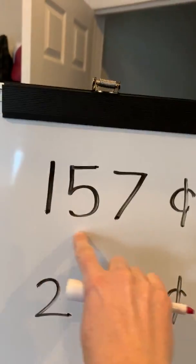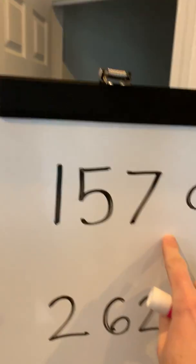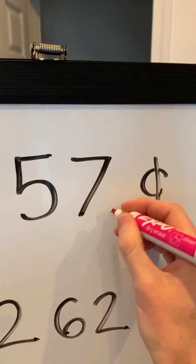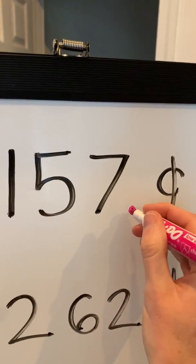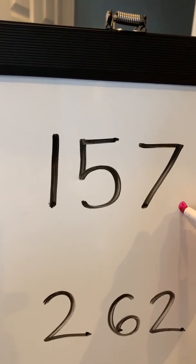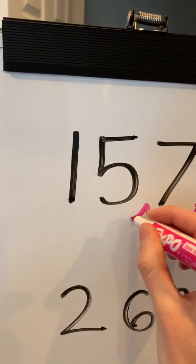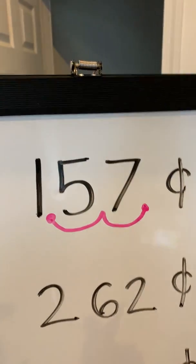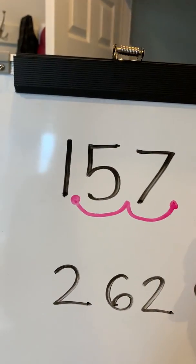Here I have 157 cents. All you need to do is find the end of the number, all the way to the right you put a dot, and you're imagining that dot traveling over one number, two numbers. So it travels over two spaces.